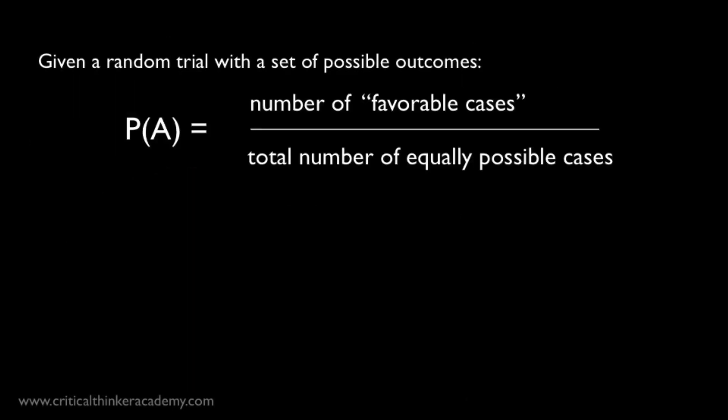The main idea behind the classical interpretation is very straightforward. Given some random trial with a set of possible outcomes, like tossing a coin or rolling a dice, we say that the probability of any particular outcome is just the ratio of the favorable cases to the total number of equally possible cases. Now here, a favorable case is just a case where the outcome in question occurs.